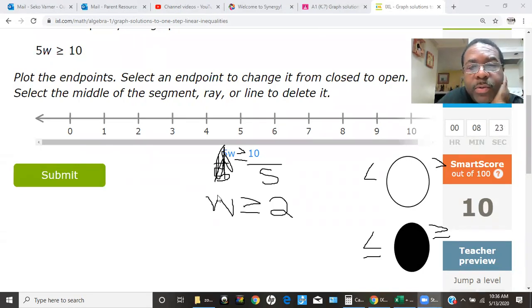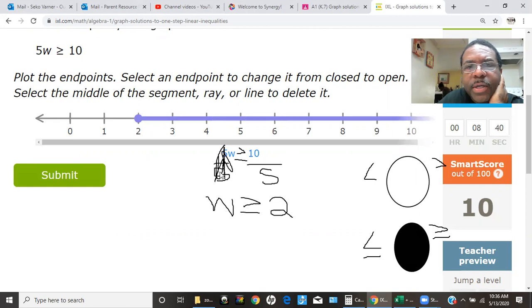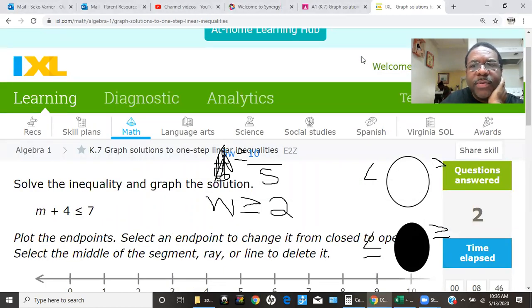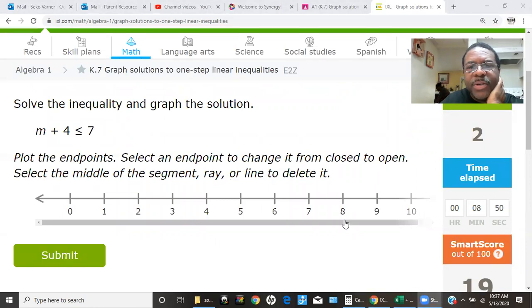Now we're going to go to the number 2 and we're going to go with the dark closed full circle, the filled in circle. When we click it once, it gives us the filled in circle. And w is greater than 2, so everything greater than 2 is what we're going to choose. Great job. This one should be really easy for you to do. So do well.